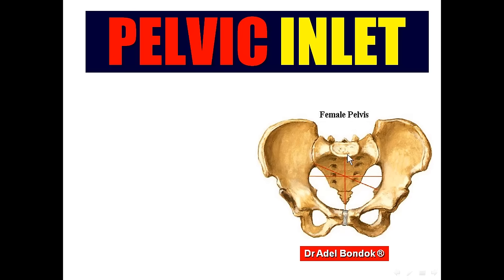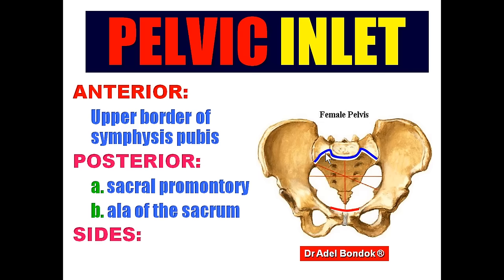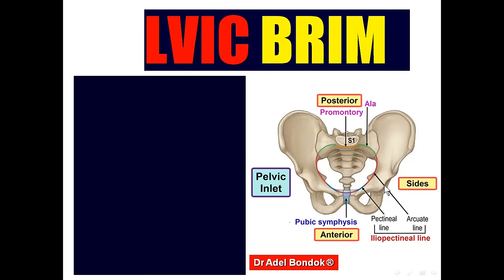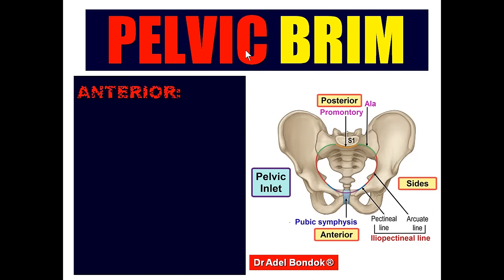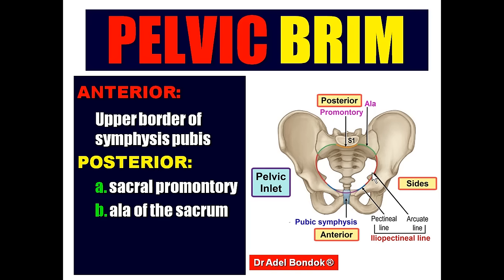The pelvic inlet, also called the pelvic brim, is bounded anteriorly by the upper border of the pubic symphysis, posteriorly by the promontory and the ala of the sacrum, and on each side by the iliopectineal line.